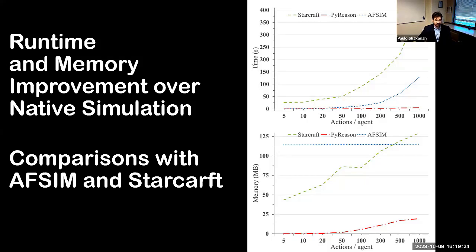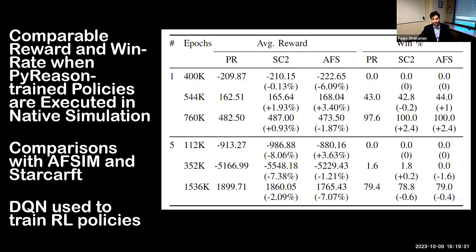This is really good news where we can go a lot faster using a semantic proxy. But then the question becomes, what kind of results do you get? We took an agent trained in PI reason and after every few epochs of training, we threw that agent into Starcraft and AFSIM and looked at what the reward would be and compared that to PI reason. We also looked at the win rate as well.